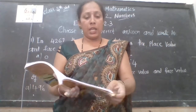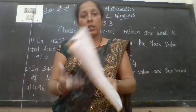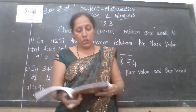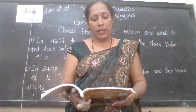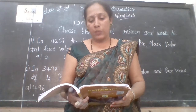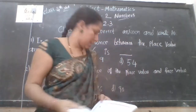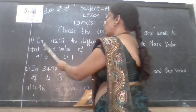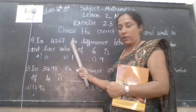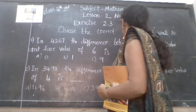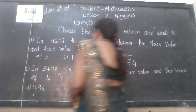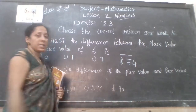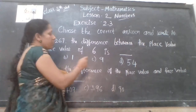For each question, they have given many questions — four questions are there. They have given answers also, but you have to choose the correct answer. First question: in 4,267, the difference between the place value and face value of 6 is dash. You should read the question properly. What is the place value of 6? 6 is in which place? Tens place. So the place value of 6 is 60.